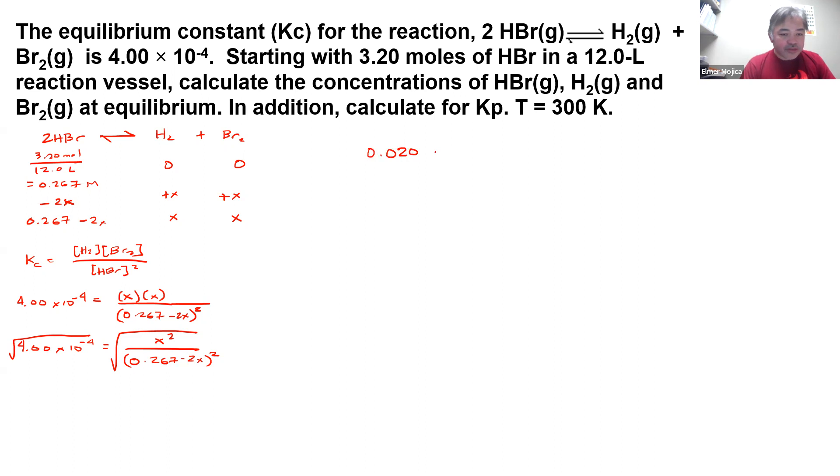And then we can do a cross-multiplication here. So what do we get from this one? So we can get 5.34 times 10^-3 minus 0.04x equals x.